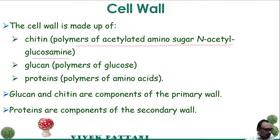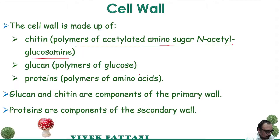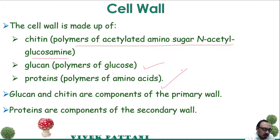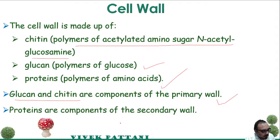Chitin is an important component of the cell wall of fungi and is used for identification purposes and to differentiate between fungi and plants. The second component present in the cell wall is glucan, which is a polymer of glucose. Third are proteins. Glucan and chitin are components of the primary cell wall, whereas proteins are components of the secondary cell wall.